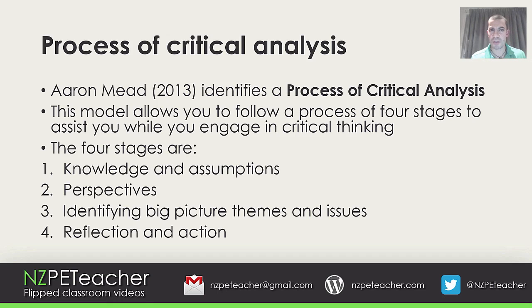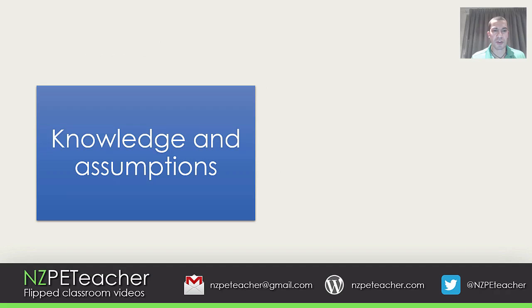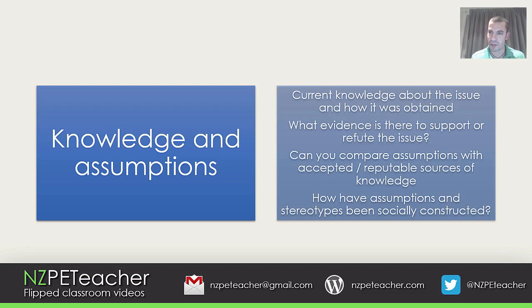Let's have a closer look at this first model. Knowledge and assumptions: this stage allows you to consider the evidence you have, what knowledge this evidence provides, and gives you an opportunity to start thinking about the assumptions that can be gleaned from that knowledge. Considerations include current knowledge about the issue and how it was obtained, what evidence is there to support or refute the issue, can you compare assumptions with accepted or reputable sources of knowledge, and how have assumptions and stereotypes been socially constructed.